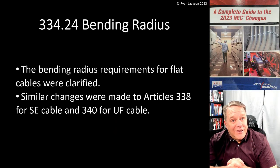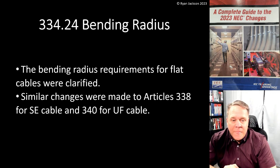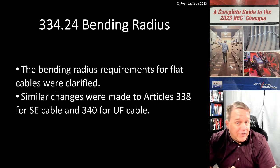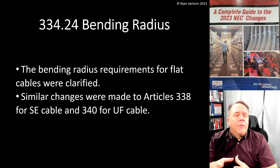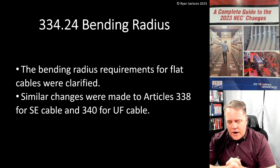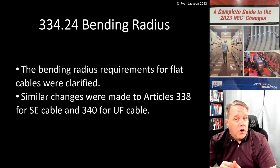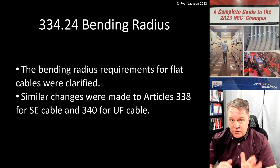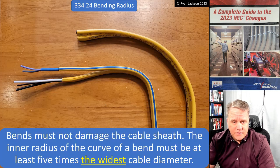334.24 covers bending radius. The bending radius requirements for flat cables were 'clarified.' Similar changes were made to Article 338 for SE cable and Article 340 for UF cable. If you install SE cable, it depends on what type you use. In my area, all the SE cable we see is SER, which is round — this change doesn't affect SER at all. But in other parts of the country, especially on the east coast, you'll see a lot of SEU installed, which is service entrance cable with an oval, flat shape. This change is a really big deal if you use SE cable.